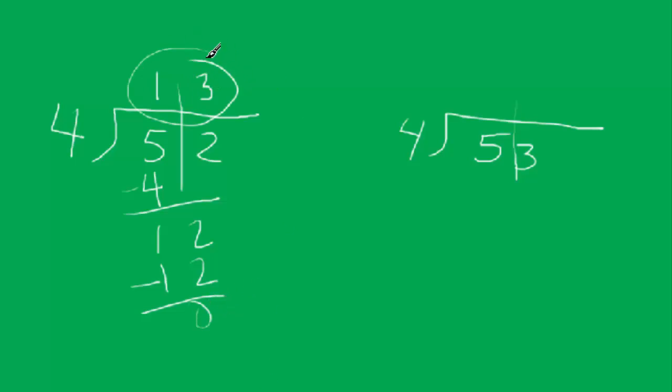Now if I increase this number just by 1, watch what happens. So we go the same route, and we say 4 into 5 goes one time. Then we subtract 4 from 5, and we have 13 this time.